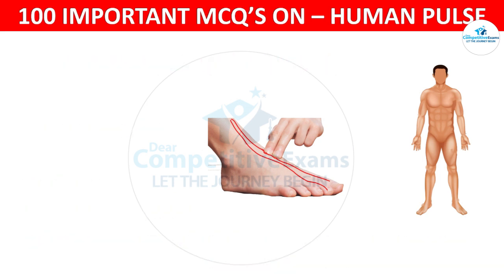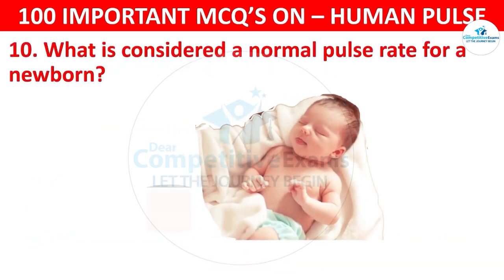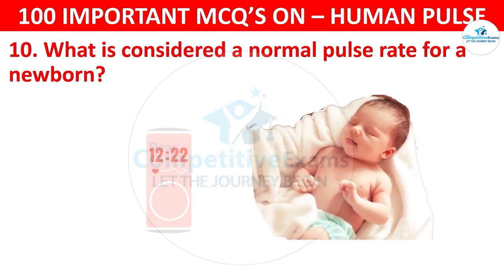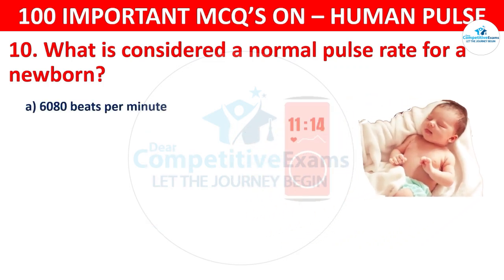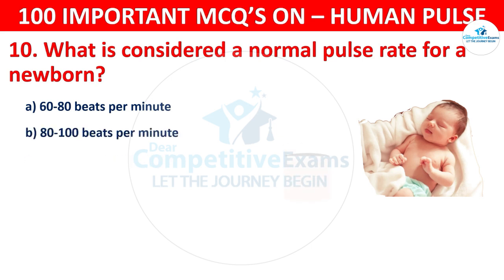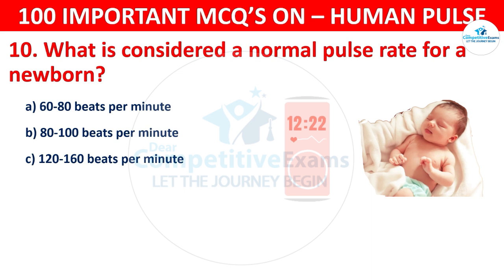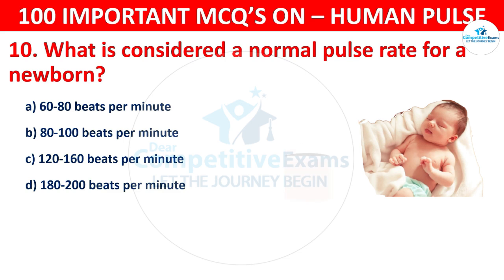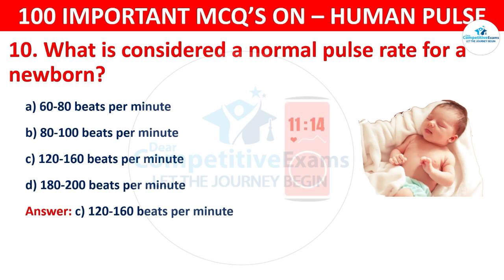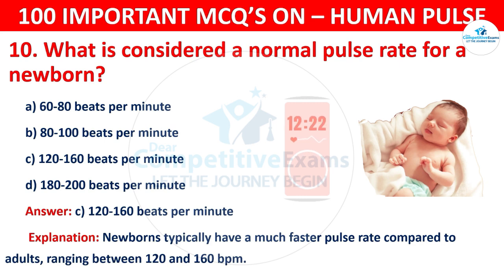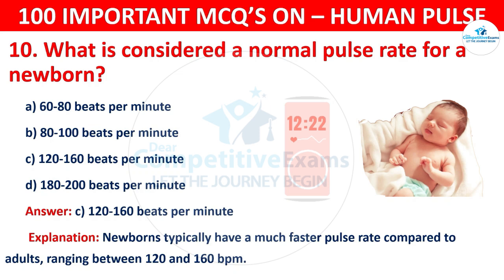Question number 10: What is considered a normal pulse rate for a newborn? Your options are: 80 to 100 beats per minute, 120 to 160 beats per minute, or 180 to 200 beats per minute. The correct answer is 120 to 160 beats per minute. Newborns typically have a much faster pulse rate compared to adults, ranging between 120 to 160 beats per minute.